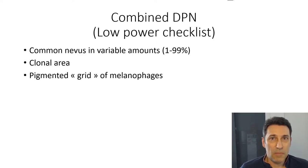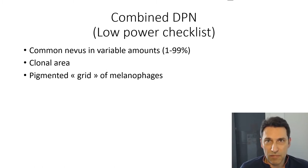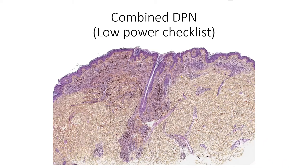Let's start with combined DPN. Here's a checklist for low power. You will be looking for an area of common nevus. You'll be looking for a clonal area, and in that clonal area, there will often be a grid of melanophages. Here is an example of combined DPN from one of my previous videos, with the nevus area, the clonal area, and the pigmented grid of melanophages.